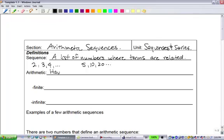Arithmetic is having to do with adding or addition or subtraction. So if we think about what an arithmetic sequence is, it's some sort of list where we're moving from term to term somehow by adding or subtracting.